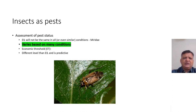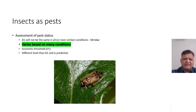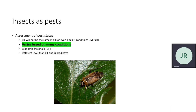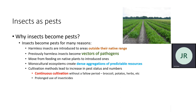Insect as pest: assessment of pest status varies based on many different conditions — which pest is there, on which plant it is. We need to assess the status of the pest, what is its level, what is its economic threshold — up to which extent it is harmful or damaging. Why do insects become pests? If their level of disturbance or harming is below the tolerable condition, we cannot consider them as pests.